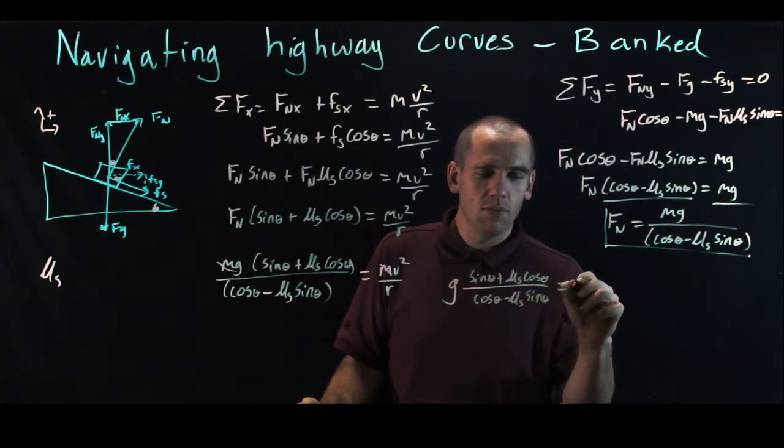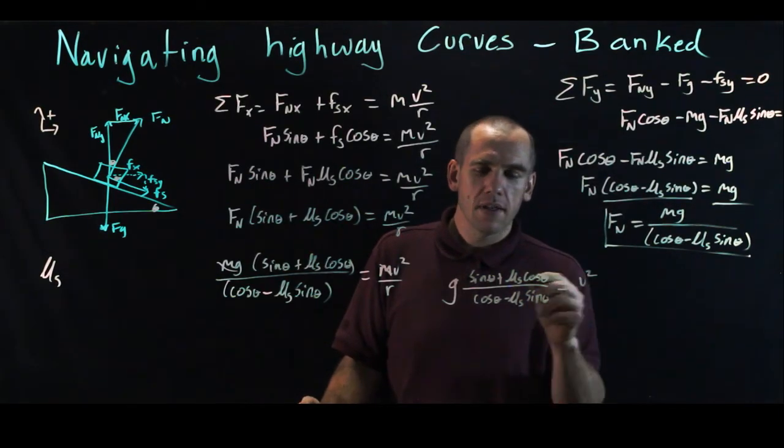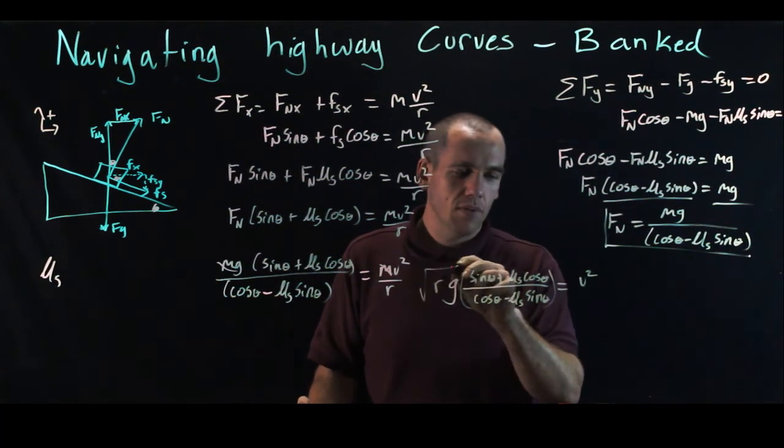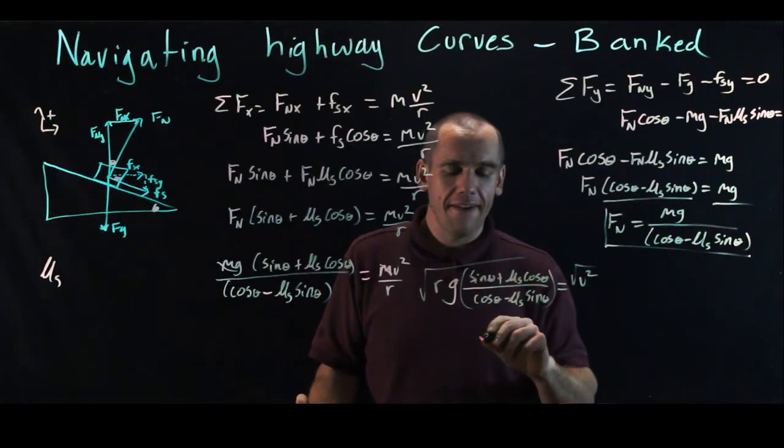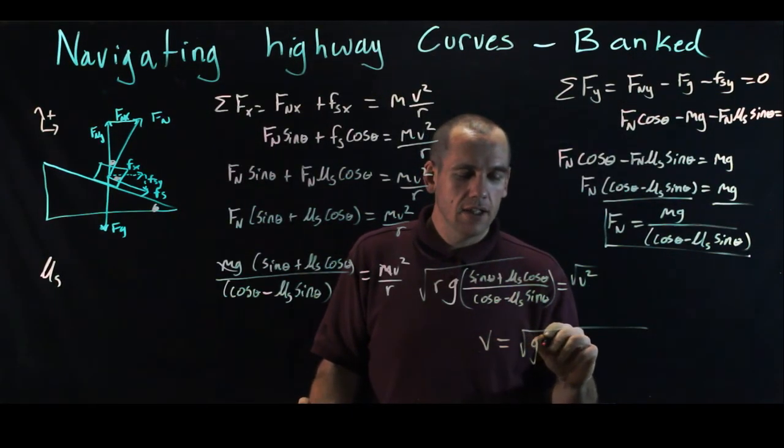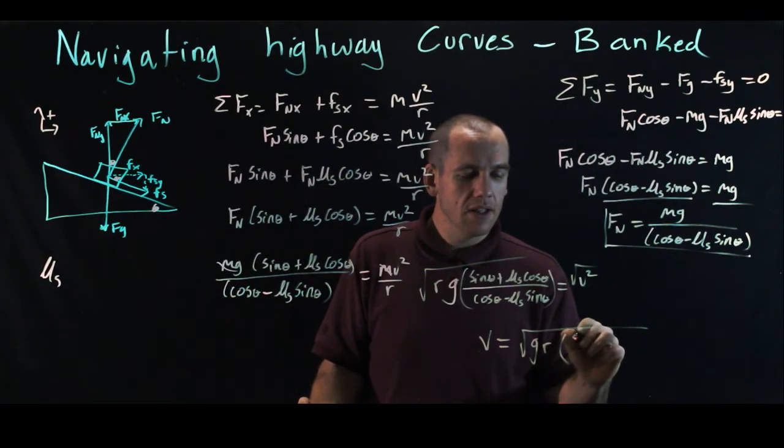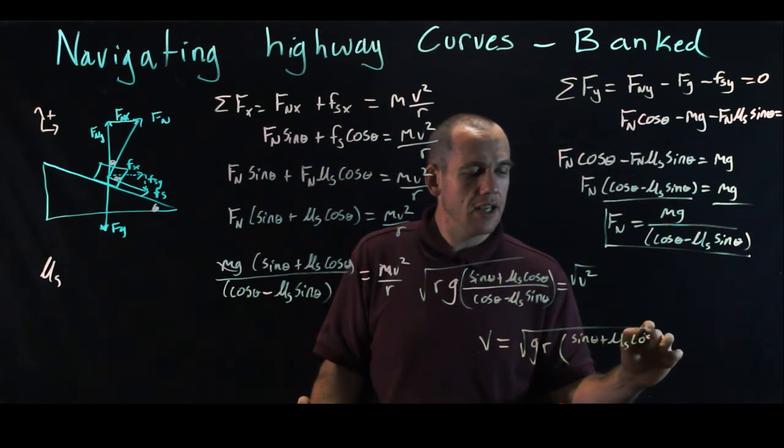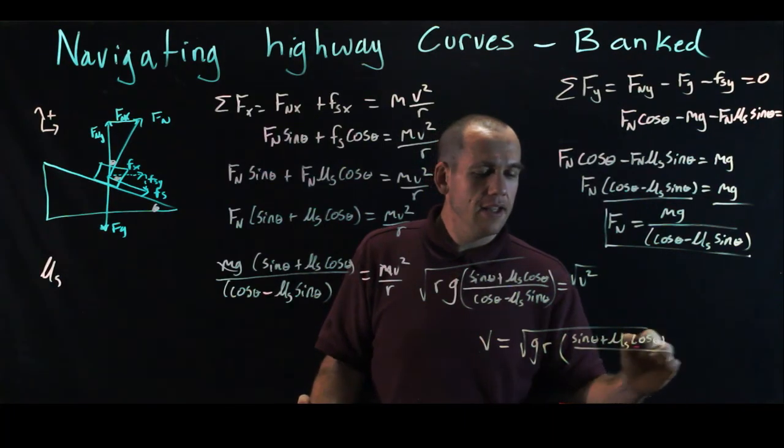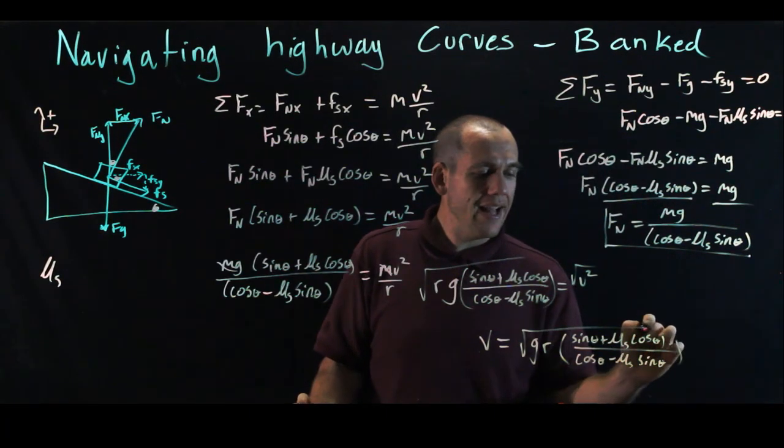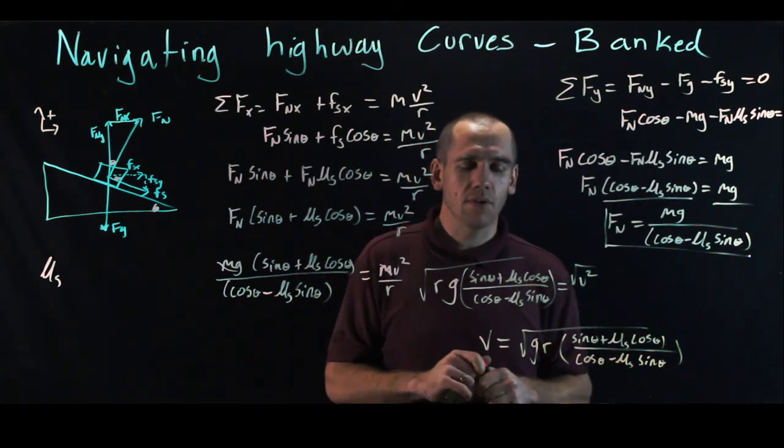We have g times sine theta plus mu S cosine theta divided by cosine theta minus mu S sine theta equals V squared over r. So if I multiply both sides by r, I get that. And I can square root that to get V is equal to the square root of g times r times the sine of theta plus mu S cosine theta divided by cosine theta minus mu S sine theta. So that's the maximum speed I can take this corner.